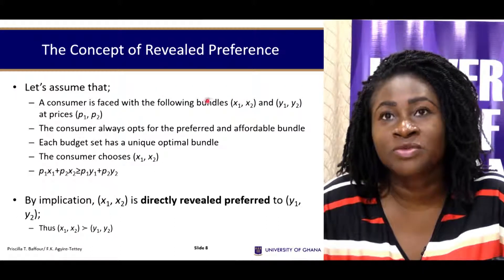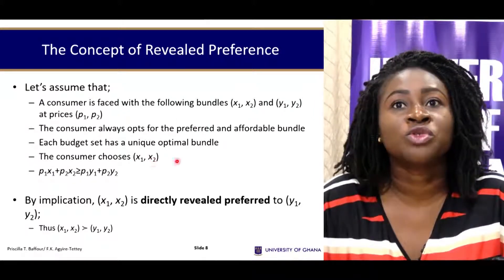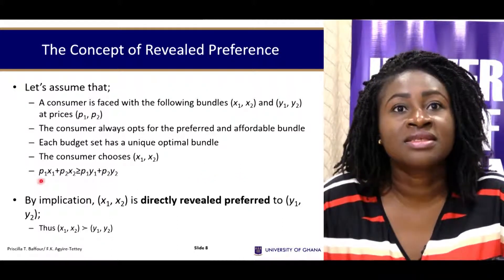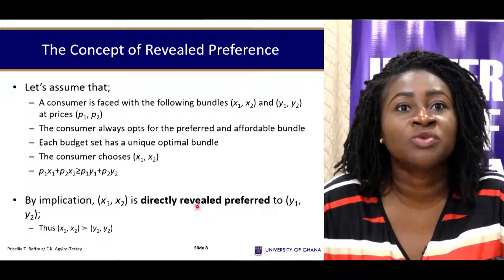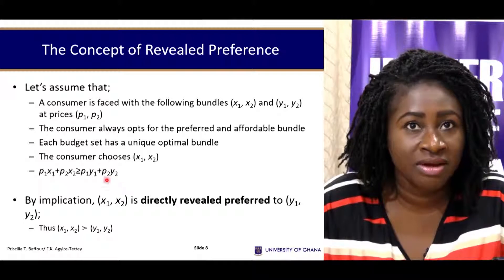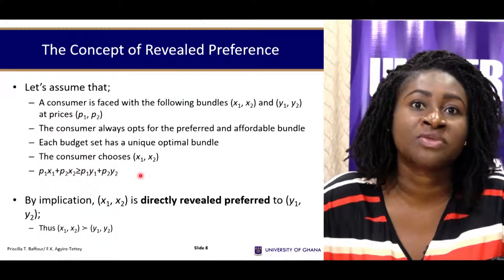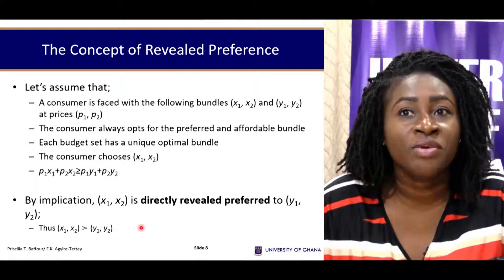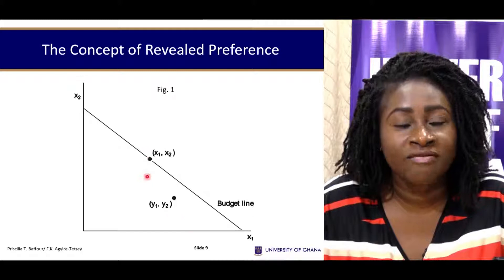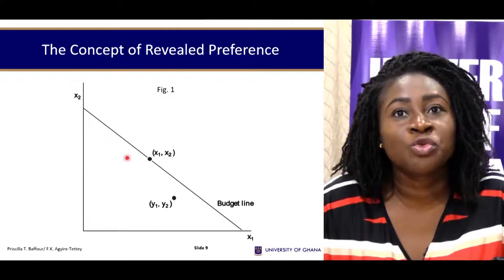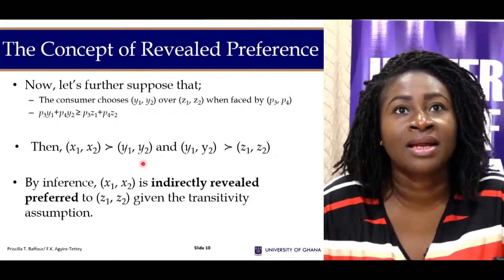Suppose a consumer is faced with bundles (X1, X2) and (Y1, Y2) at prices P1 and P2. The consumer needs to choose the optimum bundle. Bundle (X1, X2) is directly revealed preferred to (Y1, Y2) if P1·X1 + P2·X2 ≥ P1·Y1 + P2·Y2. From this diagram, you can see that (X1, X2) is a superior bundle, so the consumer reveals a preference for (X1, X2) over (Y1, Y2).